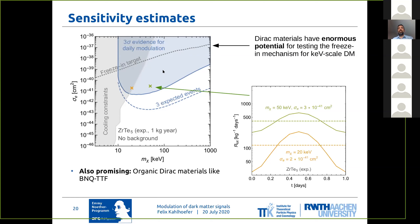Meaning that in this range you wouldn't need to rely on the total rate, but really just the modulation amplitude — and this would in some sense be independent of potential backgrounds. This is based on an optimistic exposure of one kilogram. Just for comparison, there's a dashed line here corresponding to the preferred parameter combinations for the freeze-in mechanism with a dark photon. This is one of the most ambitious targets for direct detection experiments because freeze-in always requires extremely small couplings, but with these kinds of detectors you can potentially reach down to these tiny interactions.